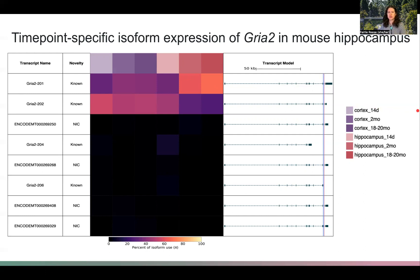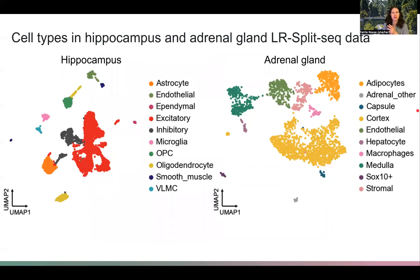On the single cell level, I want to give the classic overview of the cell types we identify in both hippocampus and adrenal gland. We identify these cell types in the corresponding short-read data and then merge these labels into the corresponding cells from the long-read data. We find all the cell types that we'd expect to see in both hippocampus and adrenal.